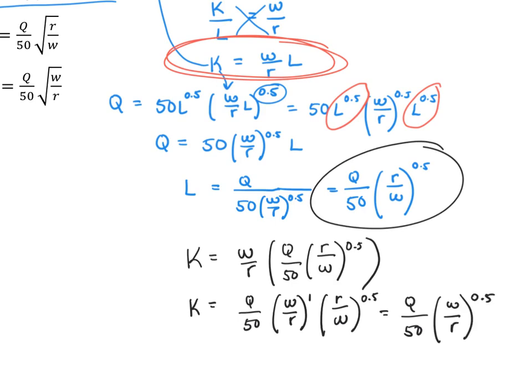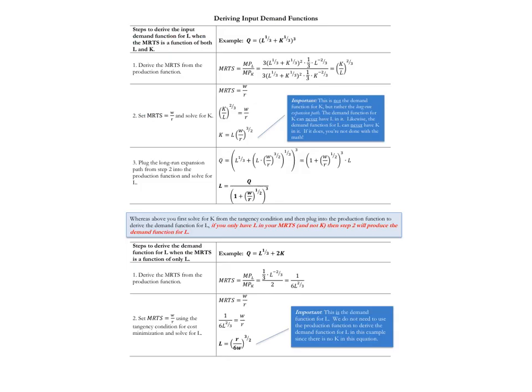This is the equation that tells us the cost minimizing amount of capital the firm will demand for any values of the rental rate, the wage rate, and output. These steps are summarized on the deriving input demand help sheet. To recap: first we derive the MRTS from the production function, then we set it equal to the input price ratio.